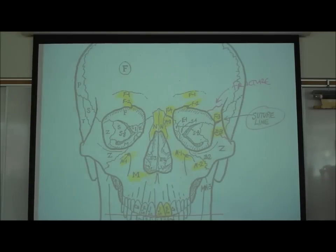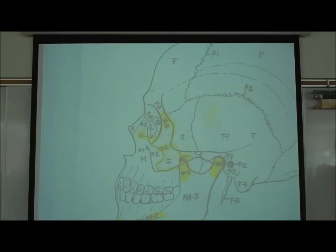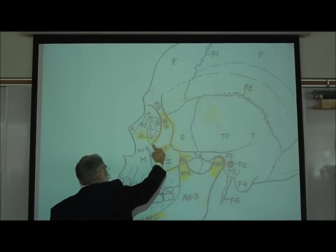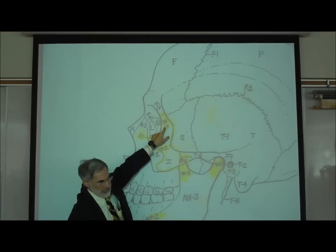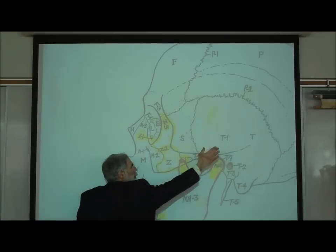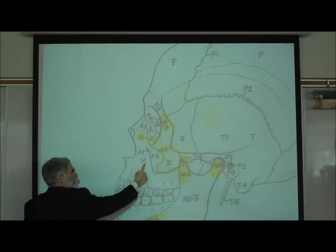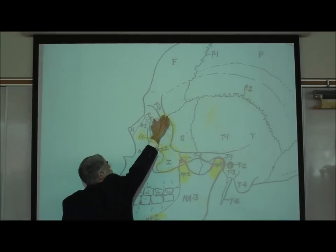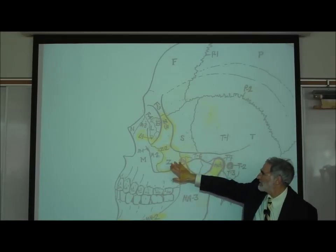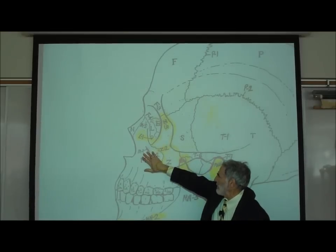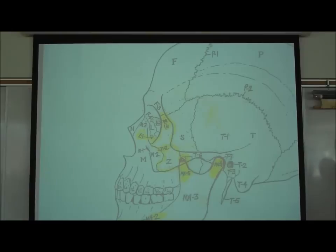On the lateral view of Mr. Skullhead, the zygomatic or cheekbone is labeled Z1, Z2, and Z3. Z1 is where the zygomatic bone attaches to the temporal bone — the temporal process of the zygomatic bone. Z2 is where it attaches to the maxilla — the maxillary process of the zygomatic bone. Z3 is the frontal process of the zygomatic bone. We're simply saying where does that zygomatic bone attach.